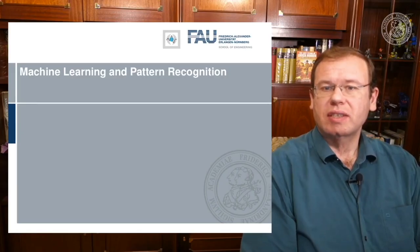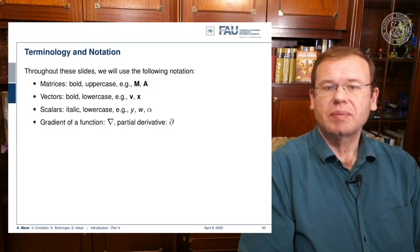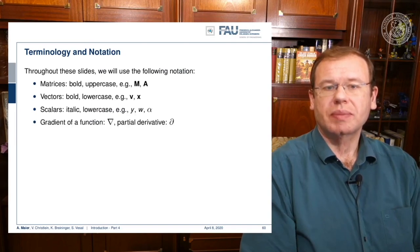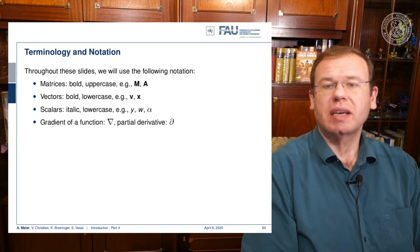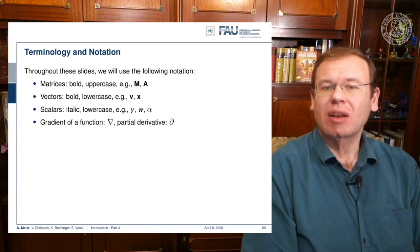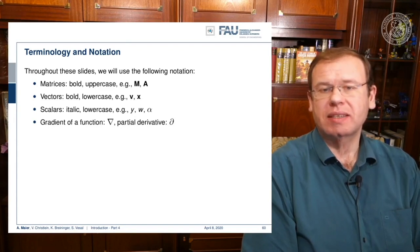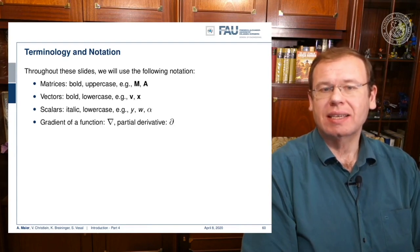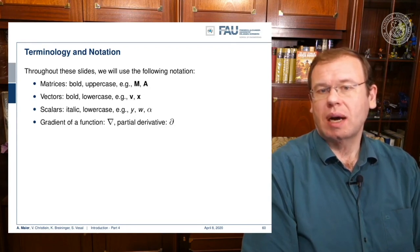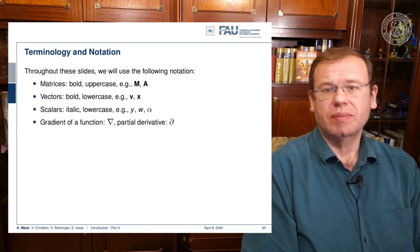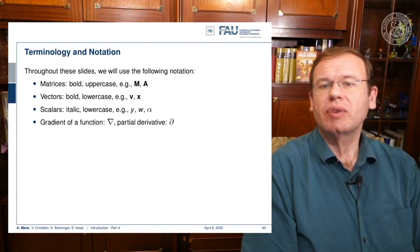Throughout this entire lecture series, we will use the following notation. Matrices are bold and uppercase — examples here are M and A. Vectors are bold and lowercase — examples here are V and X. Scalars are italic and lowercase, for example Y, W, and alpha. For the gradient of a function, we use the gradient symbol, and for partial derivatives, we use the partial notation.